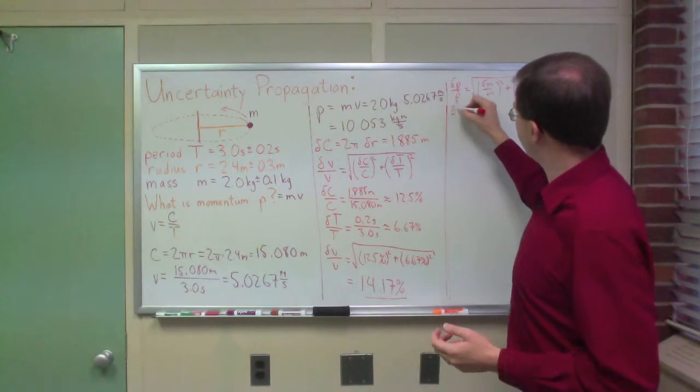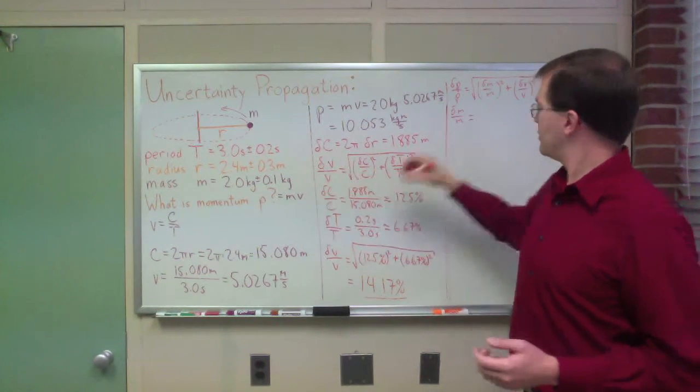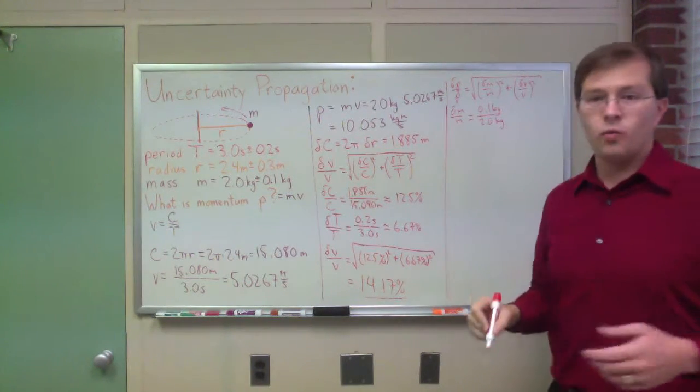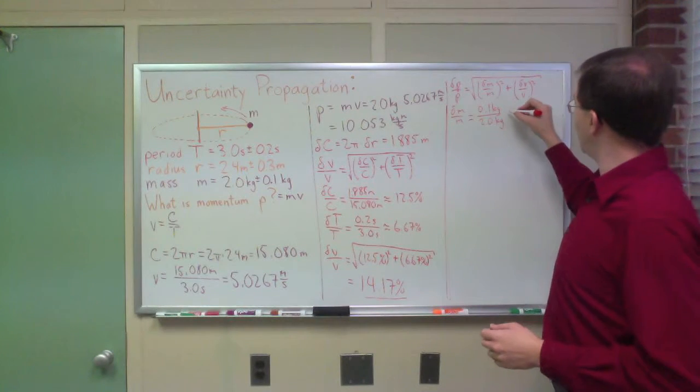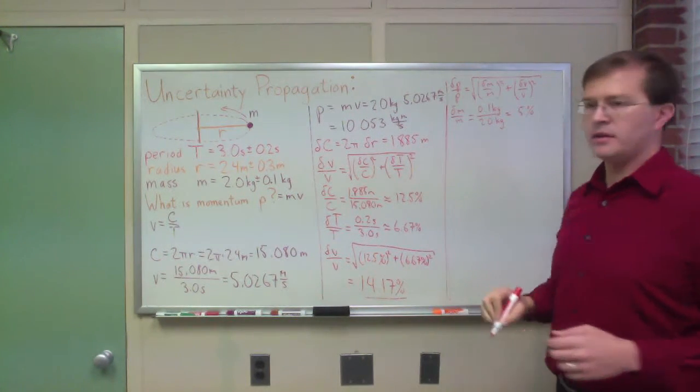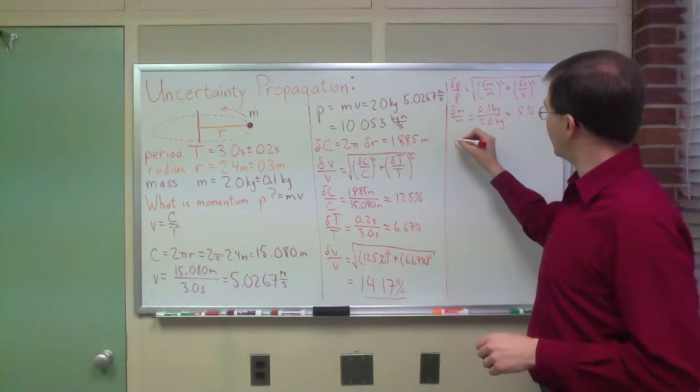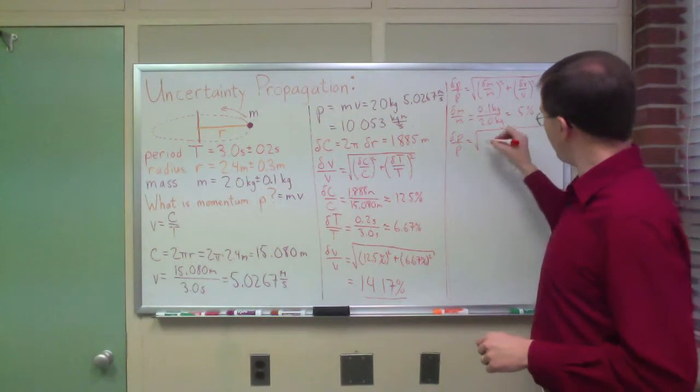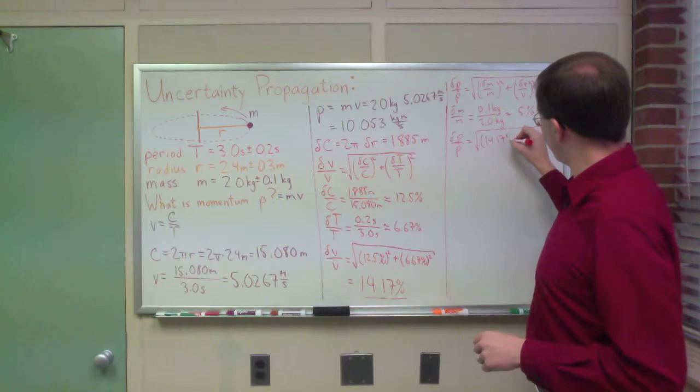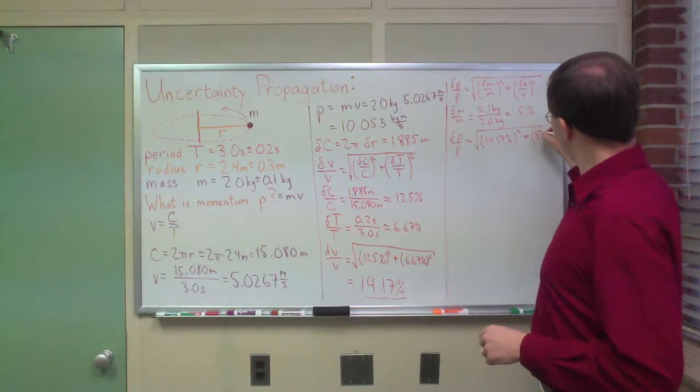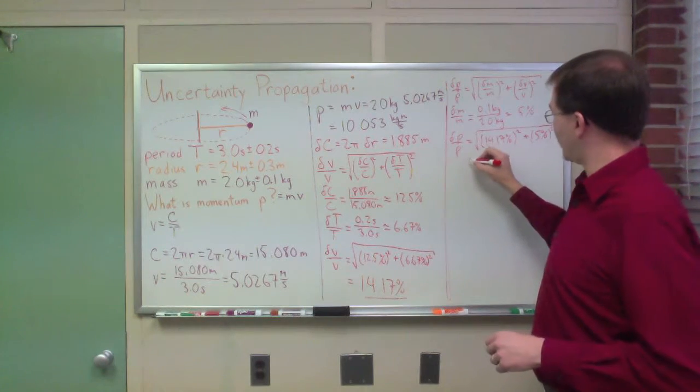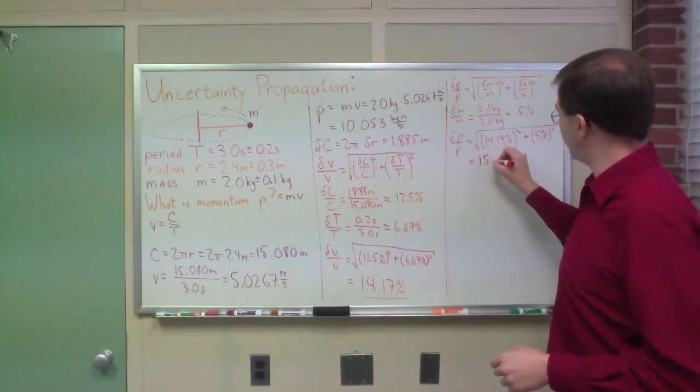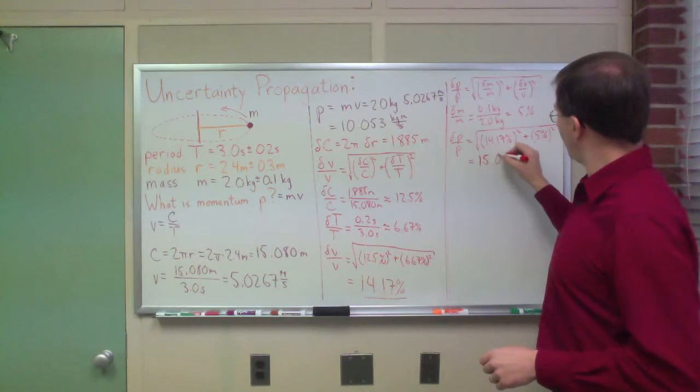Putting those together, my delta m over m, I guess I haven't worked that out yet, delta m over m is 0.1 kilograms divided by 2.0 kilograms. Once again, the units cancel out. So I end up getting 5%, 0.05. That's handy. And so now I can find out that my delta p over p, my relative uncertainty in the momentum, is the square root of 14.17% squared plus 5% squared. We're going to find that this is pretty close to the original number. It ends up being 15.02%.